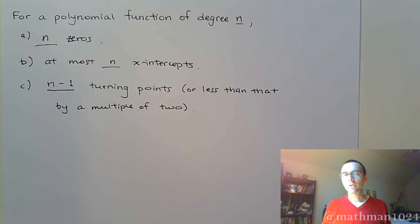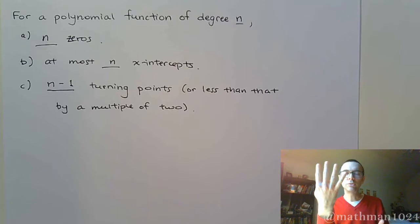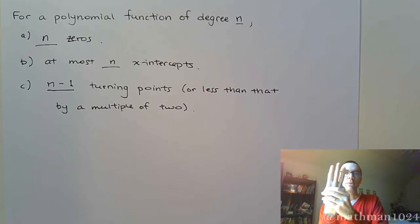If you have a polynomial function of degree 4, degree 4 means you're going to have four zeros. You're going to have, at most, four x-intercepts. The most number of times that a polynomial function of degree 4 can cross the x-axis is four times. But the number of turning points, you will have n minus 1, so take one away.